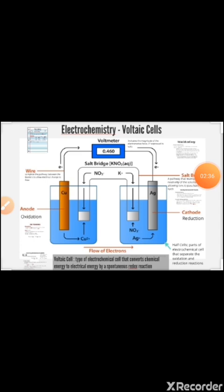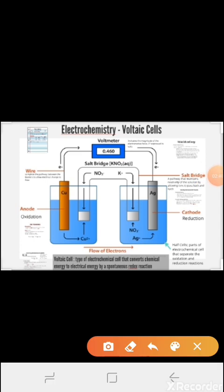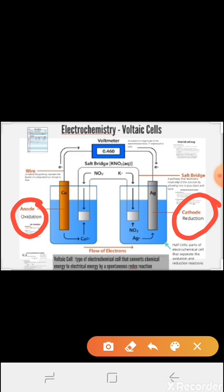Look at this Voltaic cell figure. The anode is called the positive terminal and the cathode is called the negative terminal. The anode undergoes oxidation and the cathode undergoes reduction.